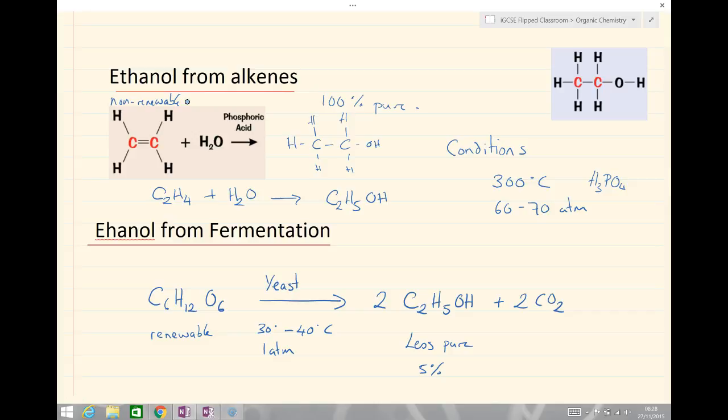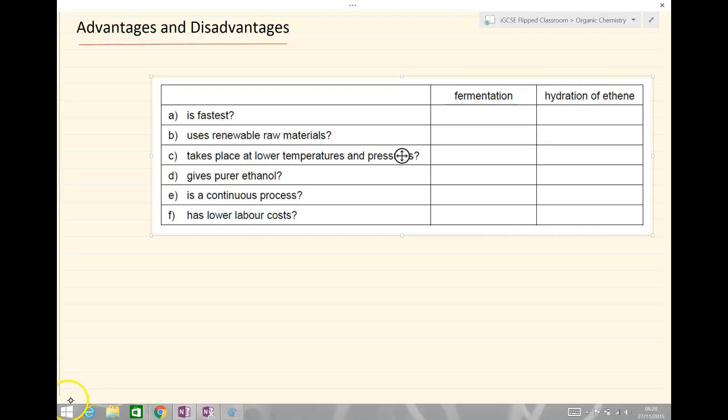We're going to have a quick look at a comparison of some of the advantages and disadvantages. Ethanol from ethene is called hydration because we're adding water to the ethene. The hydration of ethene is very fast. It happens almost immediately. Fermentation takes a couple of weeks. Uses renewable raw materials. Well, ethene is non-renewable. Fermentation is a renewable resource.